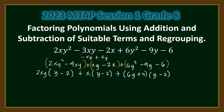Notice that (y minus 2) is a common binomial factor across all three groups. So we factor out (y minus 2) and write what is left in each term: (y minus 2) times (2xy plus x plus 6y plus 3).